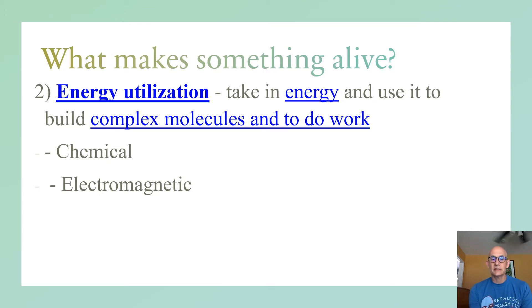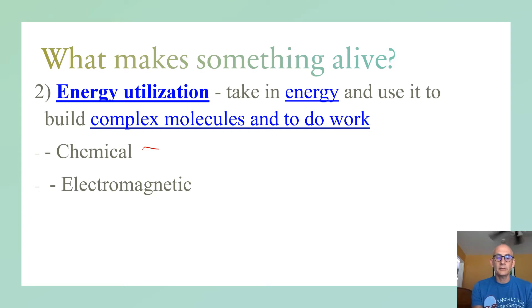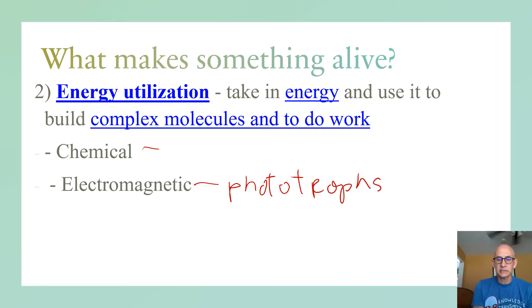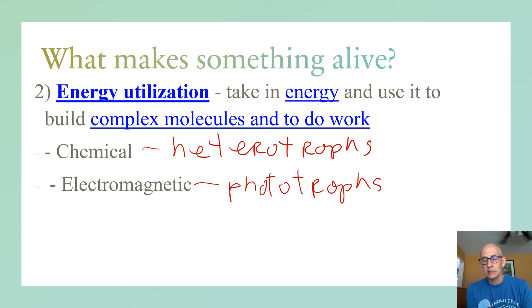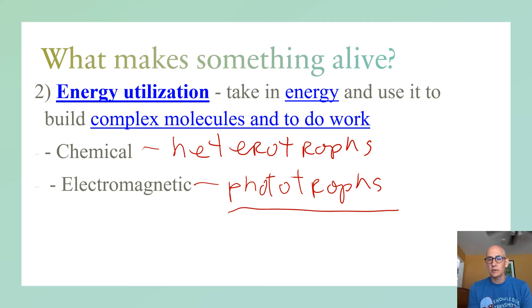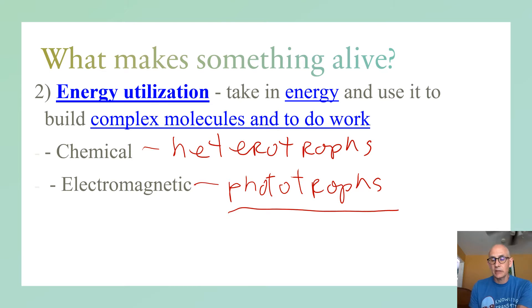Everything that's alive has to have some type of energy utilization. The energy used will either be chemical — for us that would be carbohydrates, fats, sugars, proteins — or electromagnetic, which would be your photosynthesizers, your plants. Those are your phototrophs or autotrophs, using light, and then there are your heterotrophs, things that have to eat other things. The key point is you must have energy coming in from outside yourself — even a plant is not making its own energy, just its own food. You cannot internally generate your own energy and be self-sustaining.